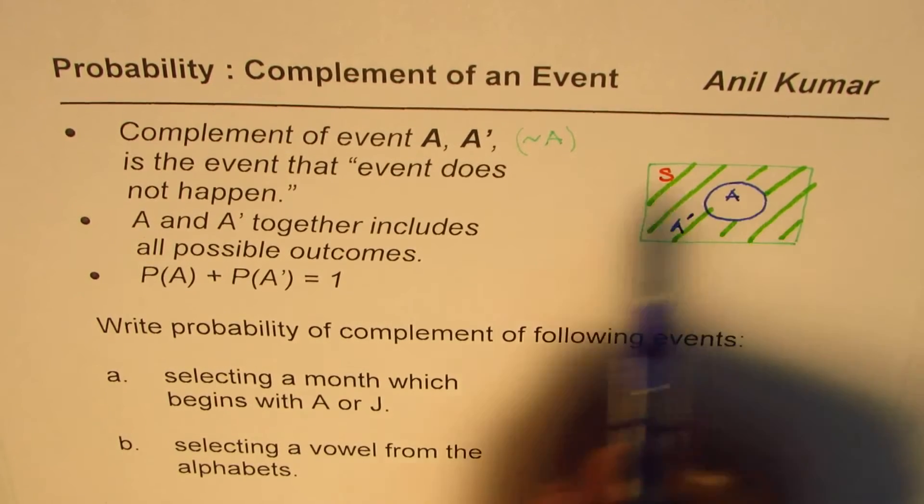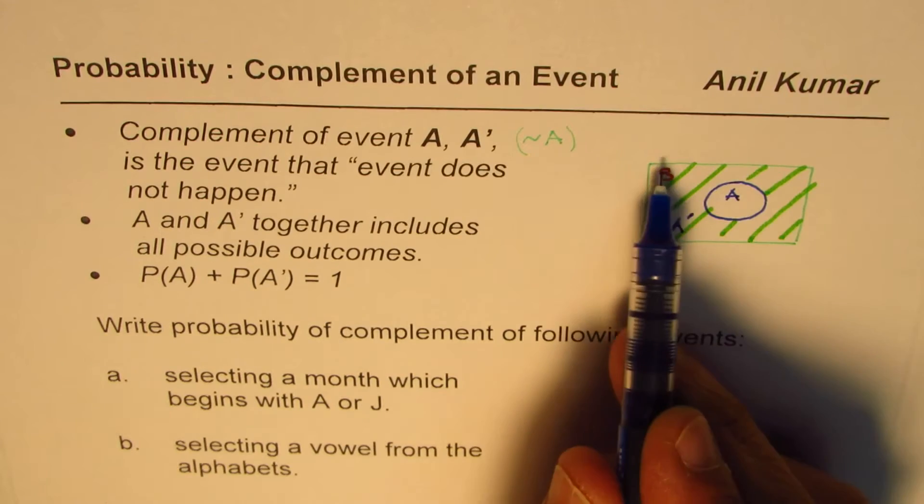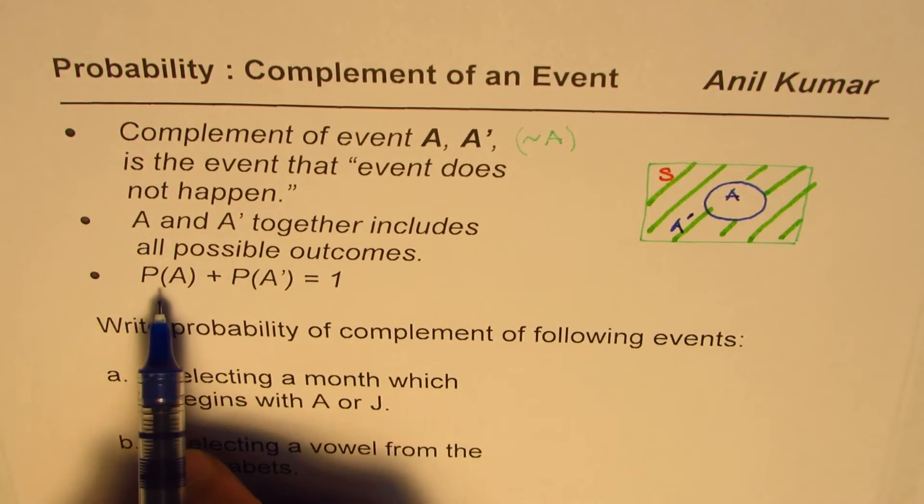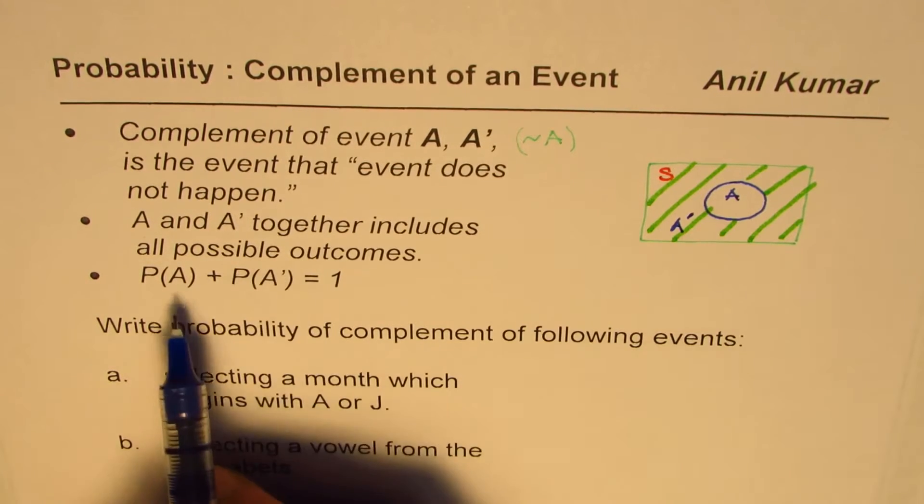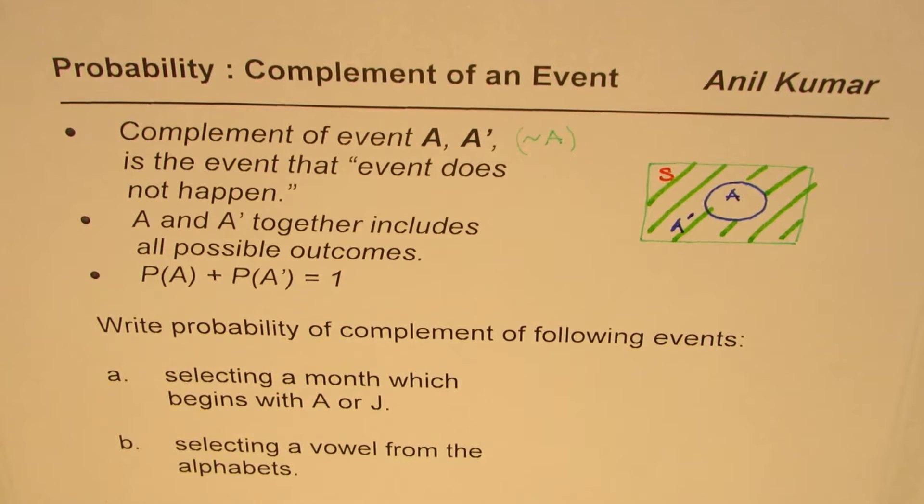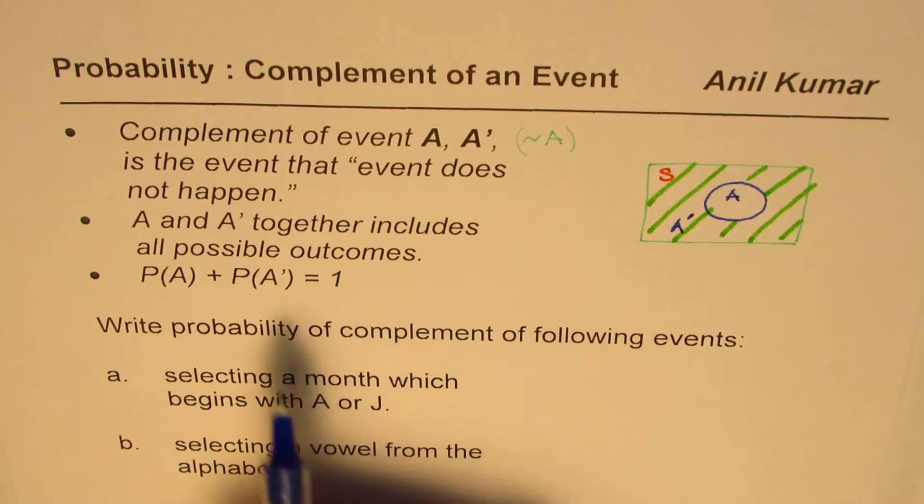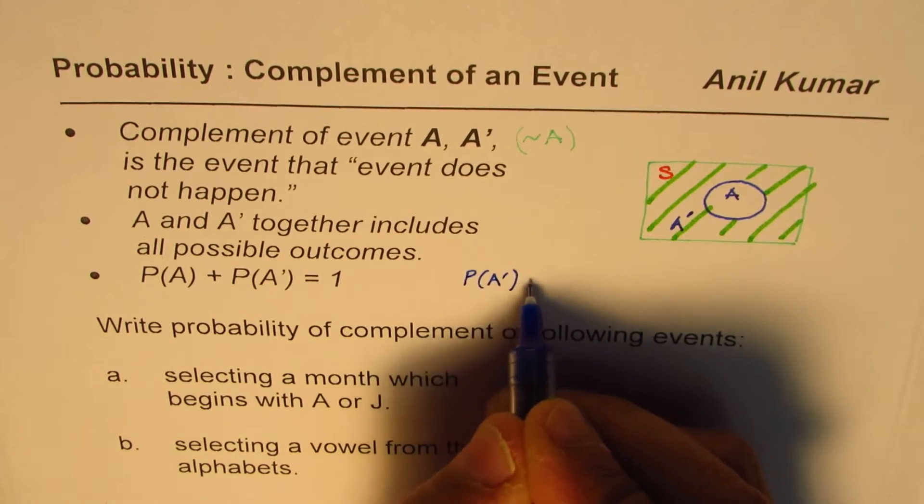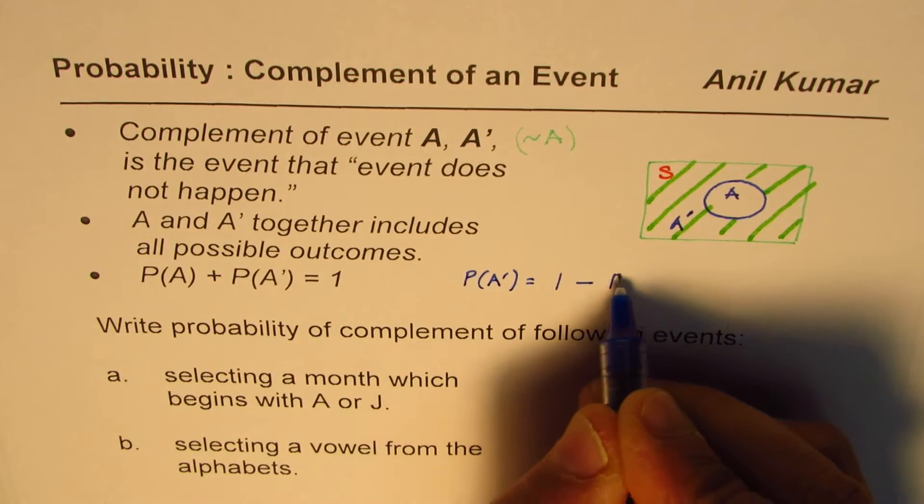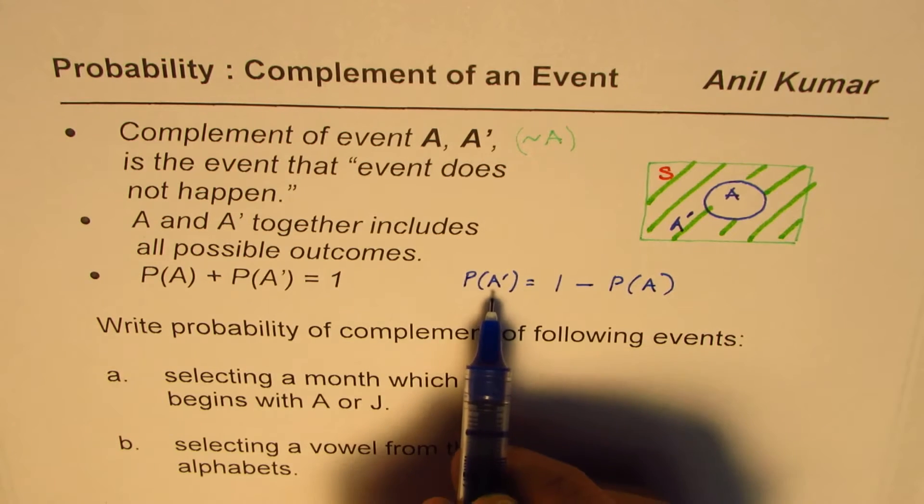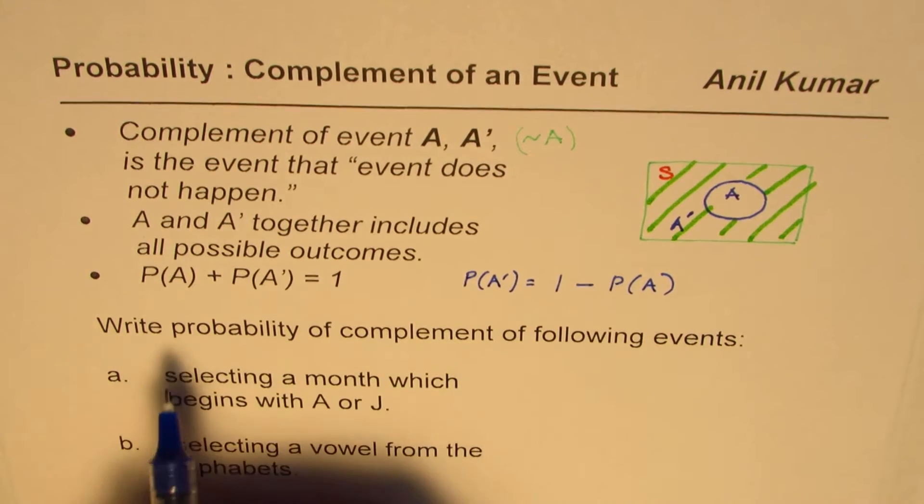So all this is A prime, complement of A. You can see here that complement of A and A totally is equal to the whole thing, all the outcomes possible. Therefore probability of sum of event A and its complement will always be one. So that is very important to understand. From here you can also write that the probability of complement will be one minus probability of the event. So we can sometimes use this equation to find probability of complement.